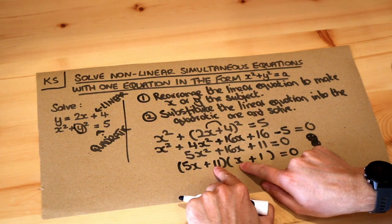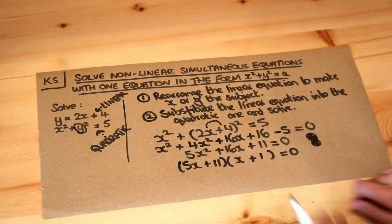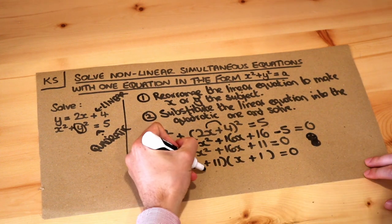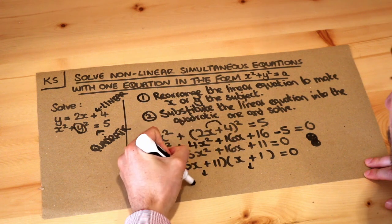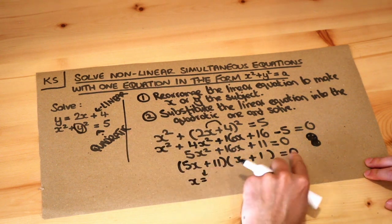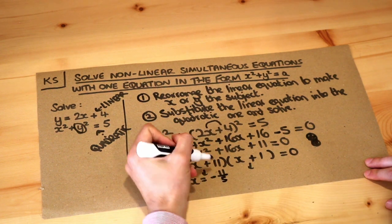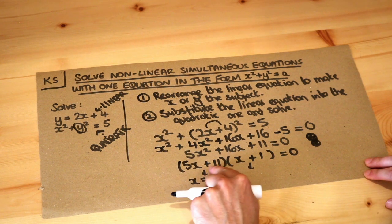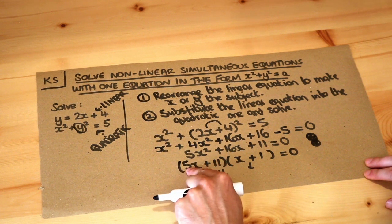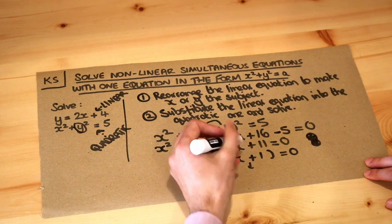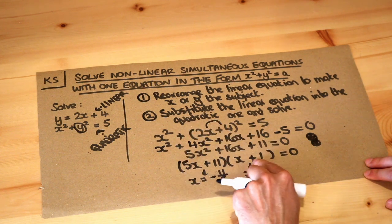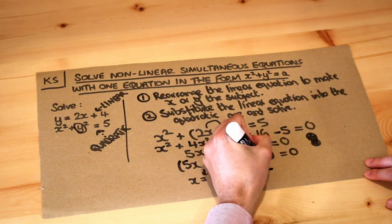Let's just check: we get 11x plus 5x which would be 16x, so this is right. Then if we make each bracket 0, if 5x plus 11 was equal to 0, we get minus 11 over 5, and the other solution is minus 1.